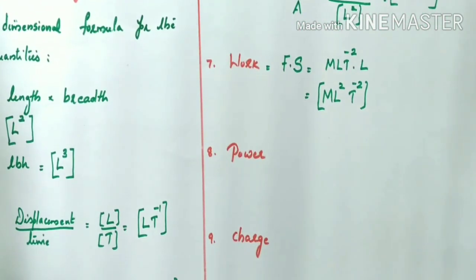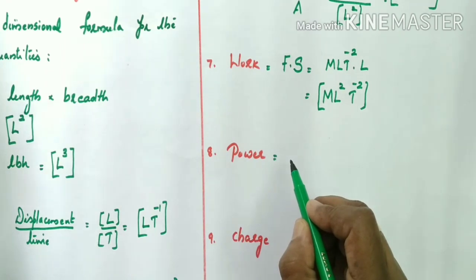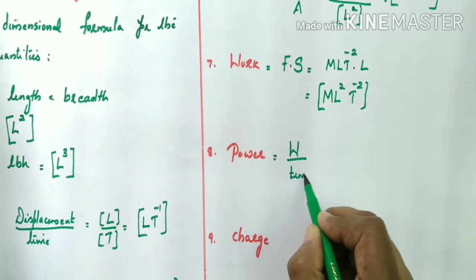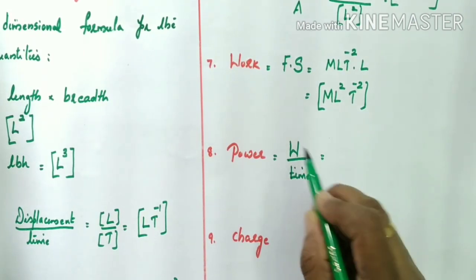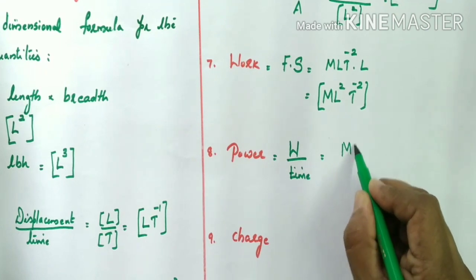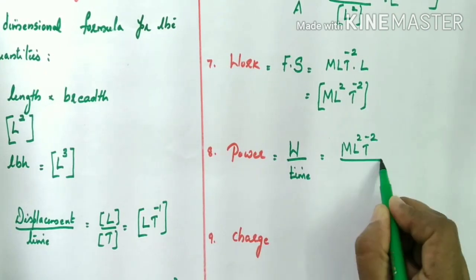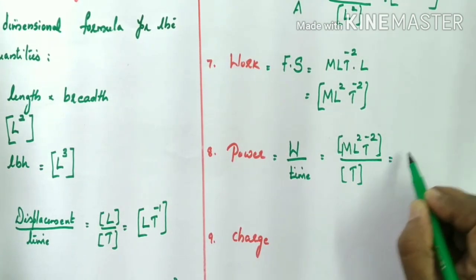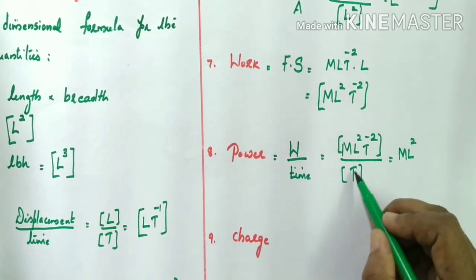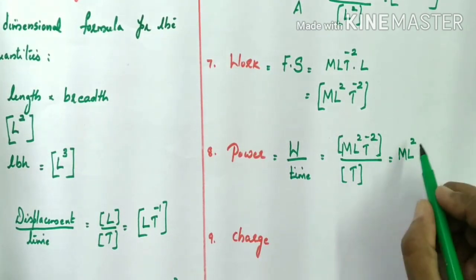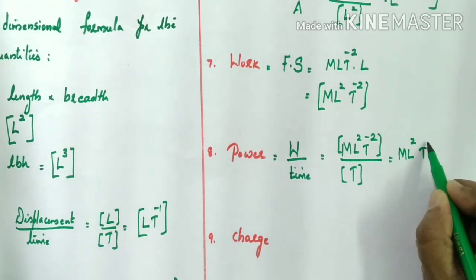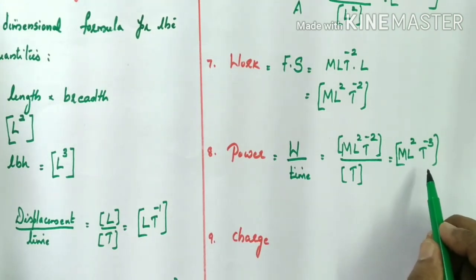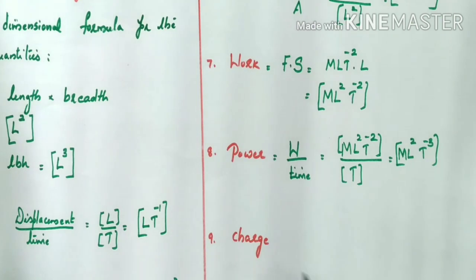Next, power. Power is the rate of doing work, so it equals work divided by time. The dimension of work is [ML²T⁻²], and the dimension of time is T. Dividing, T¹ in the denominator becomes T⁻¹ in the numerator, combining with T⁻² to give T⁻³. So the dimension of power is [ML²T⁻³].